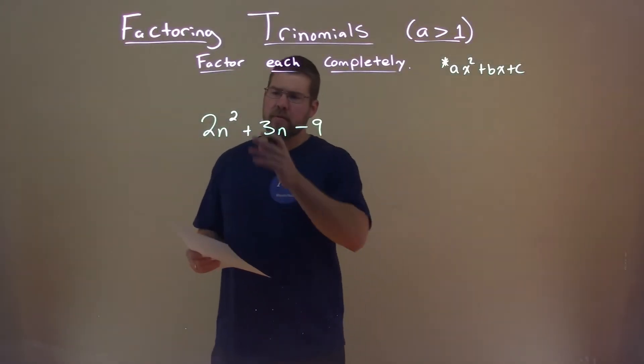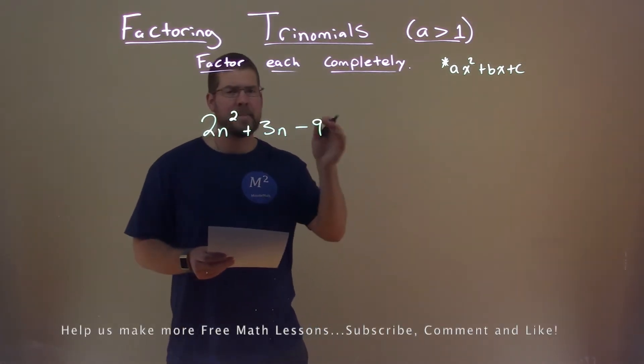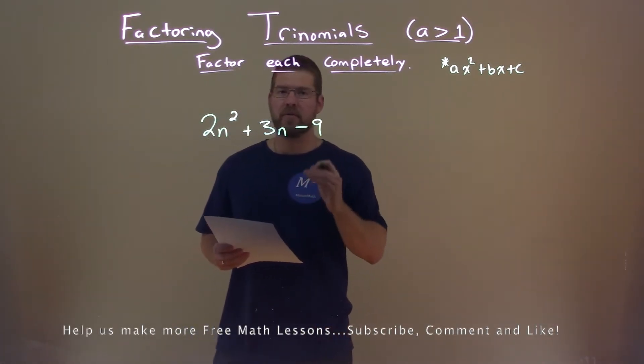We're given this problem here: 2n² + 3n - 9, and we need to factor this completely.